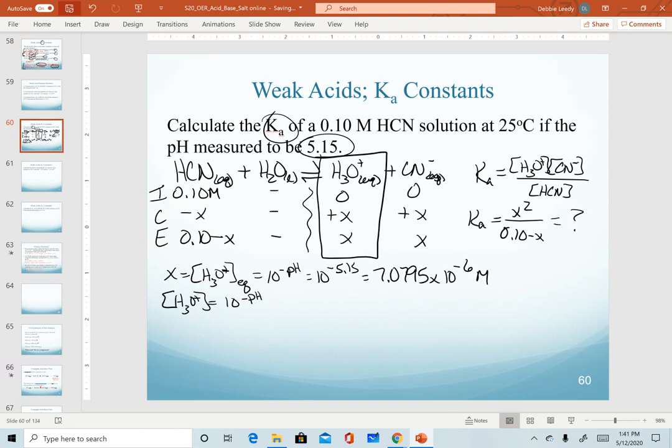That is a value of 7.0795, extra digits here because it's not final answer, times 10 to the minus 6. Since that's x, it is a concentration in our ICE table. That is now our x value and that can now be plugged into our equilibrium expression.